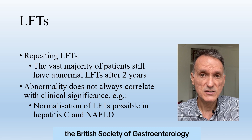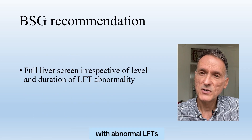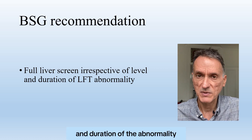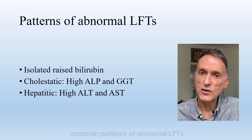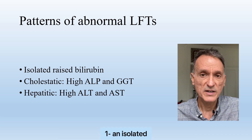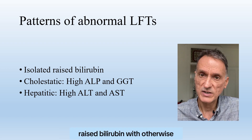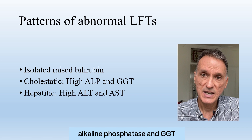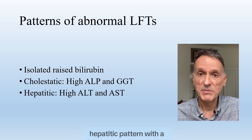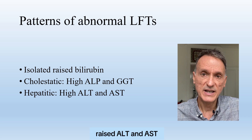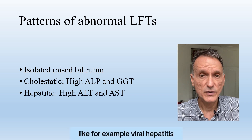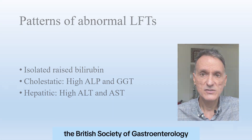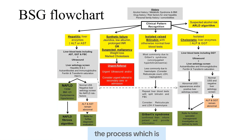This has led the British Society of Gastroenterology to recommend that patients with abnormal LFTs should have a full liver screen irrespective of the level and duration of the abnormality. And before moving on, let's remember that there are three common patterns of abnormal LFTs: one, an isolated raised bilirubin with otherwise normal liver tests; two, a cholestatic pattern, normally showing a high alkaline phosphatase and raised gamma-GT; and three, a hepatitic pattern, with a raised ALT and AST, indicating hepatocellular injury, like for example viral hepatitis, NAFLD, and alcohol-related liver disease.